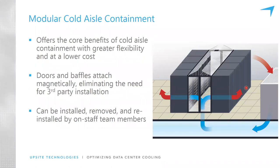When we look at modular or partial cold aisle containment, there's a gap between the baffles and the top of the aisle. This gap does not affect the potential for optimizing the balance between supply and demand air. The benefits of modular partial containment are that it can be installed and relocated by staff — it doesn't require third-party installation or construction activities.